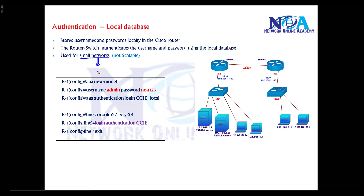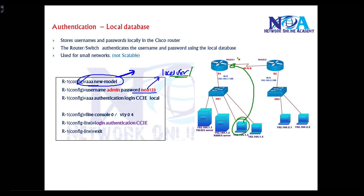To configure local database authentication, first we have to enable the AAA process. By default, the AAA process is disabled, so we need to enable it using the 'aaa new-model' command. Then we configure one local user account so that whenever a user tries to log into the router via Telnet, they have credentials to authenticate with.